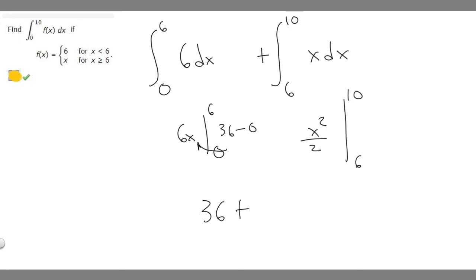So let's do 10 first. If we plug in 10, 10 squared is going to be 100, and then we divide it by 2, so it's going to become 50. Then we minus 6, whatever 6 plugged in. So 6 squared is 36, and we divide it by 2, so it's going to be 18.